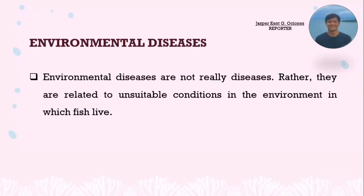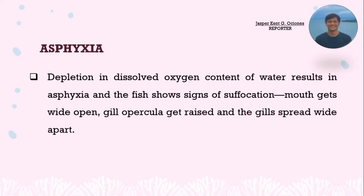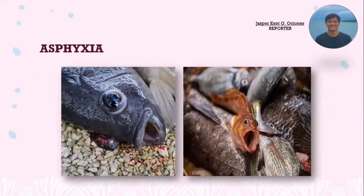Environmental diseases are not really diseases. Rather, they are related to unsuitable conditions in the environment in which fish live. The first is asphyxia. Asphyxia is the depletion of dissolved oxygen content of water, which results in the fish showing signs of suffocation: the mouth gets wide open, gill operculum gets raised, and gills spread wide apart.